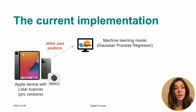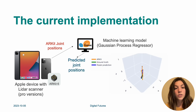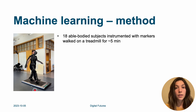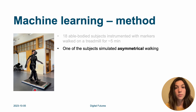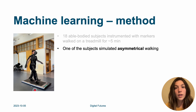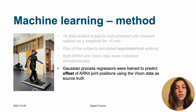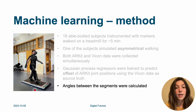In the current implementation, we collect the ARKit joint positions and process them locally on the computer, then get the predicted joint positions and compare them with the ground truth and the ARKit initial positions. For the machine learning method, we had 18 able-bodied subjects instrumented with markers who walked on a treadmill for around five minutes. One subject simulated asymmetrical walking to test if the model can predict asymmetric movements. Both ARKit and Vicon data were collected simultaneously, and Gaussian process regressors were trained to predict the offset of ARKit joint positions using Vicon data as ground truth. Angles between segments were then calculated.